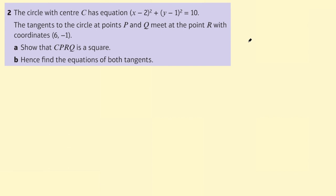Let's go through an AS level challenge question from the section on circles and tangents. The circle with center C has equation (x-2)² + (y-1)² = 10. The tangents to the circle at points P and Q meet at the point R with coordinates (6, -1). Part A says show that C, P, R, Q is a square.